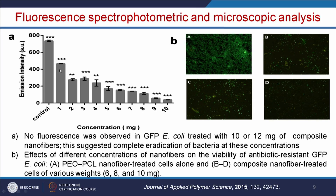Every experiment must be repeated 3 to 5 times, the average calculated, and a standard deviation error bar plotted. The stars above the bars indicate statistical significance—more stars means more statistically significant data. The control shows the highest bacterial count, and with increasing nanoparticle concentration, the bacterial number decreases.